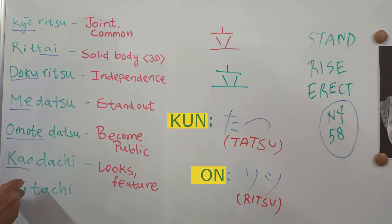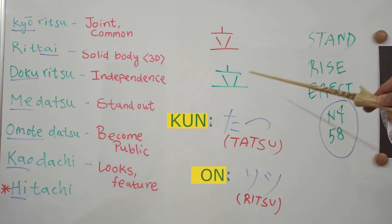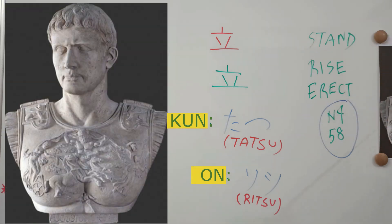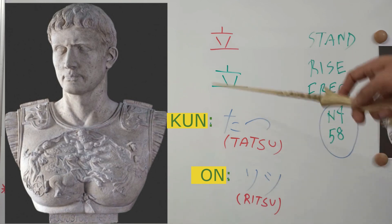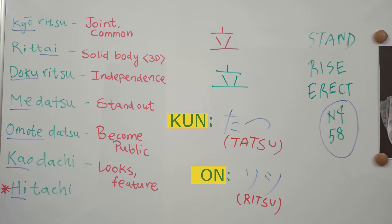Hitachi — hi means sun or day, but this is not a meaning-based word; this is the name of a company. So that's the overall kanji covered: stroke order, mnemonic technique, the meaning of this kanji, on and kun readings, and some common words. Thank you very much for your time and patience.